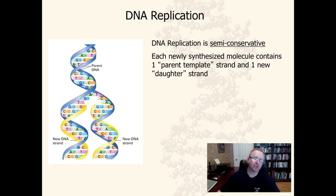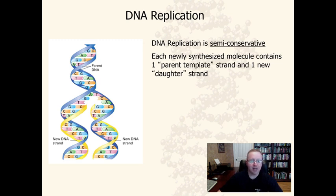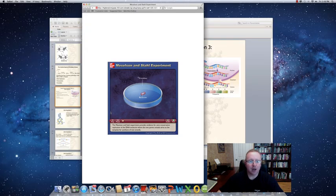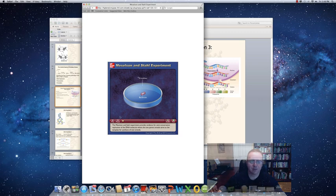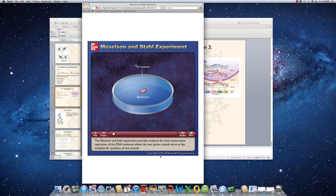Semi-conservative means holding back one of the original strands as a new strand is being added. In the picture shown, the parent DNA is in blue and the new strands are in yellow, resulting in two new identical DNA molecules. A really important experiment by Meselson and Stahl showed definitively that DNA replication occurs semi-conservatively. The Meselson and Stahl experiment provides evidence that the two parent strands serve as the template for synthesis of new strands.